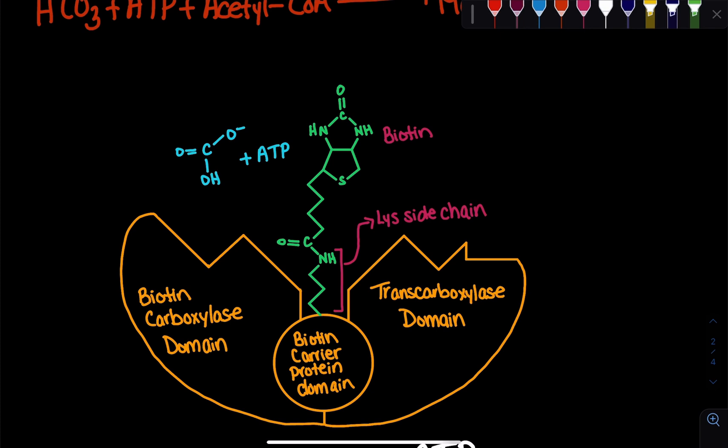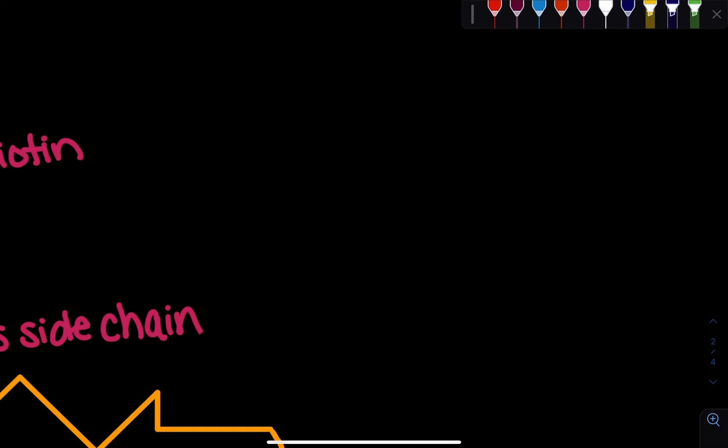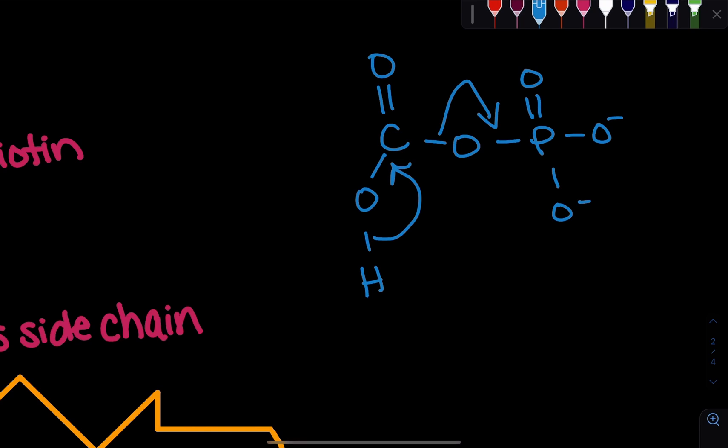It's going to form a carboxyphosphate intermediate. Once that intermediate is formed, that same phosphate bond that we made is going to break off, and we're going to result with carbon dioxide. I can quickly depict that right over here. If this is our bicarbonate, we have that negatively bound oxygen nucleophilically attacks that phosphate, so it gains a phosphate. This is our carboxyphosphate intermediate. In the next step, it's going to be a spontaneous step where we're going to lose this phosphate, and as a result, phosphate is lost, and we're going to be left with CO2.